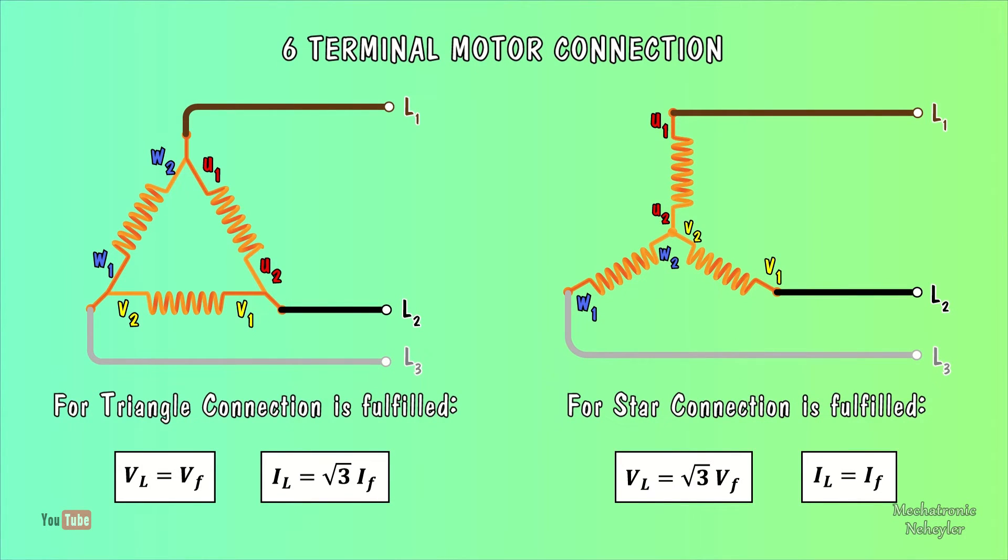Where, for the triangle connection it is fulfilled: the line voltage is equal to the phase voltage, and the line current is equal to the square root of three multiplied by the phase current.